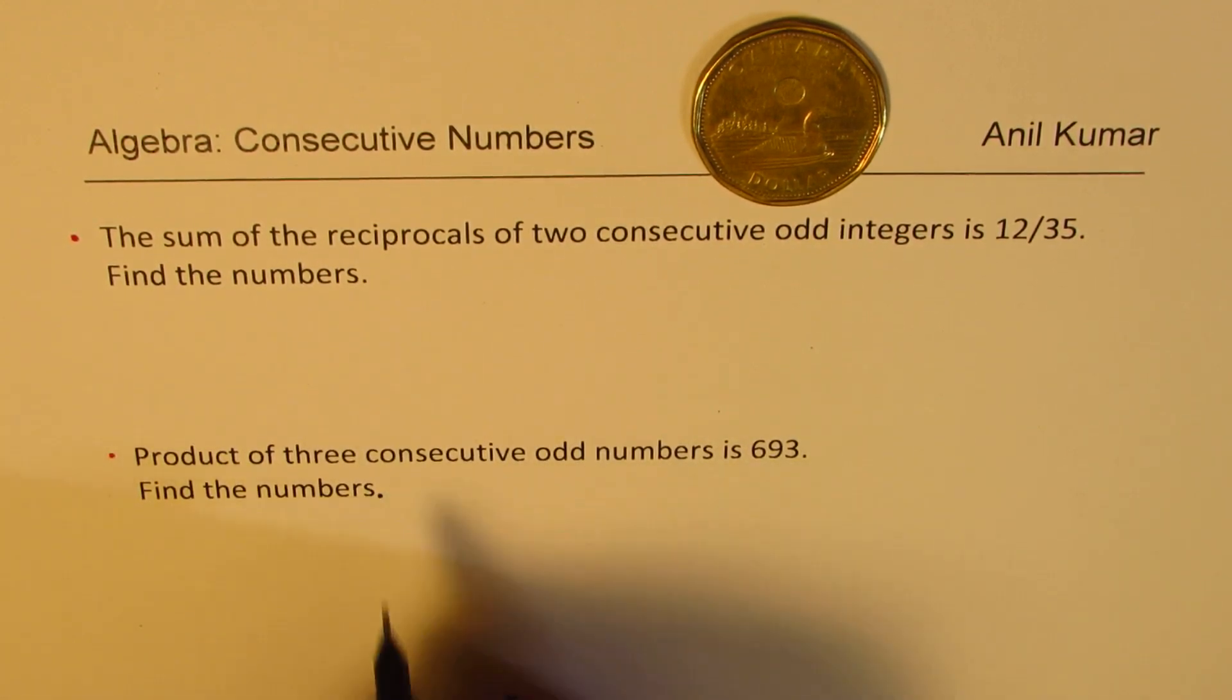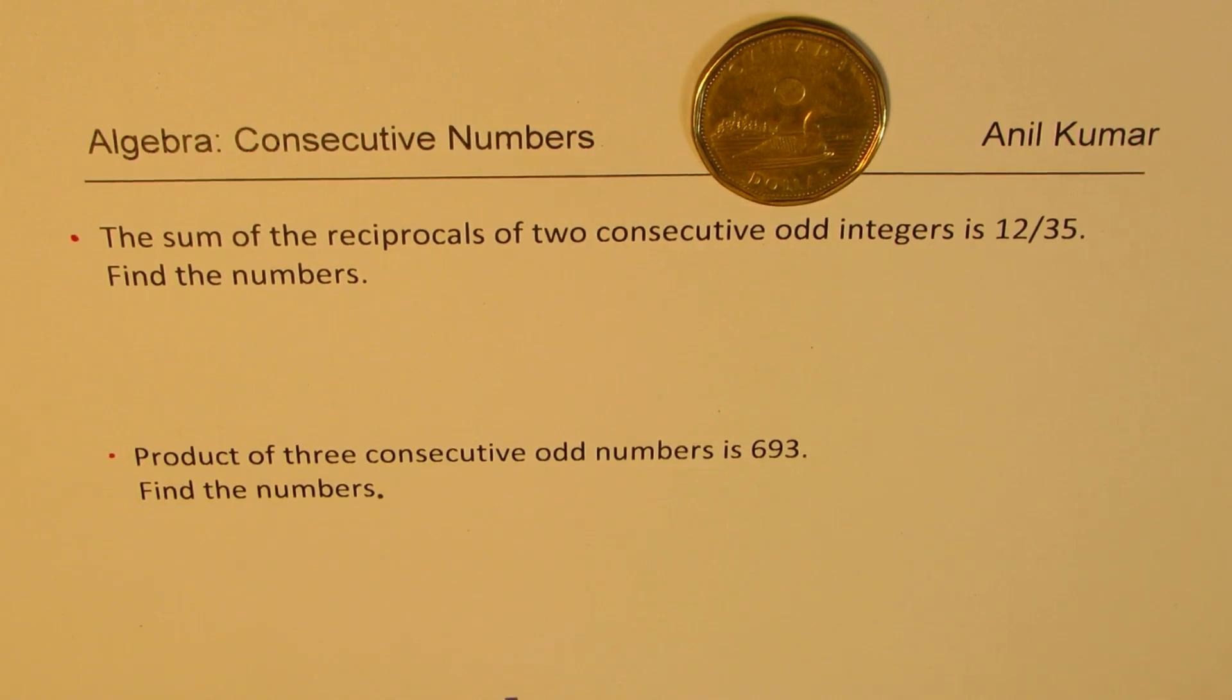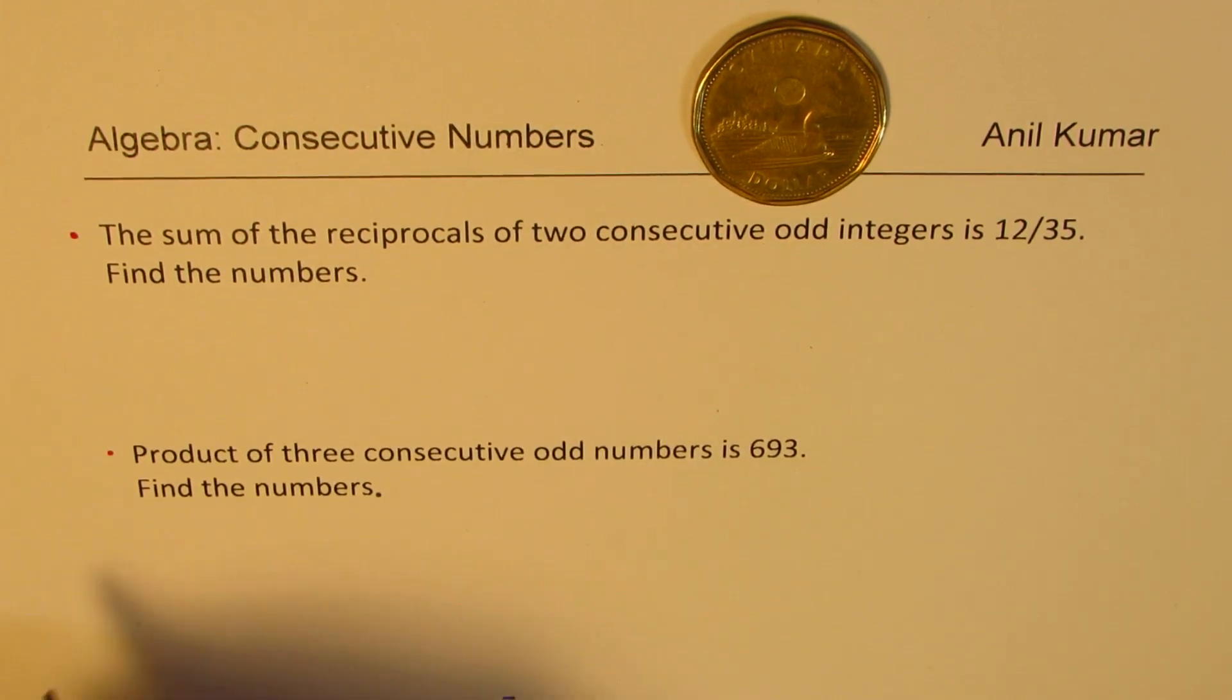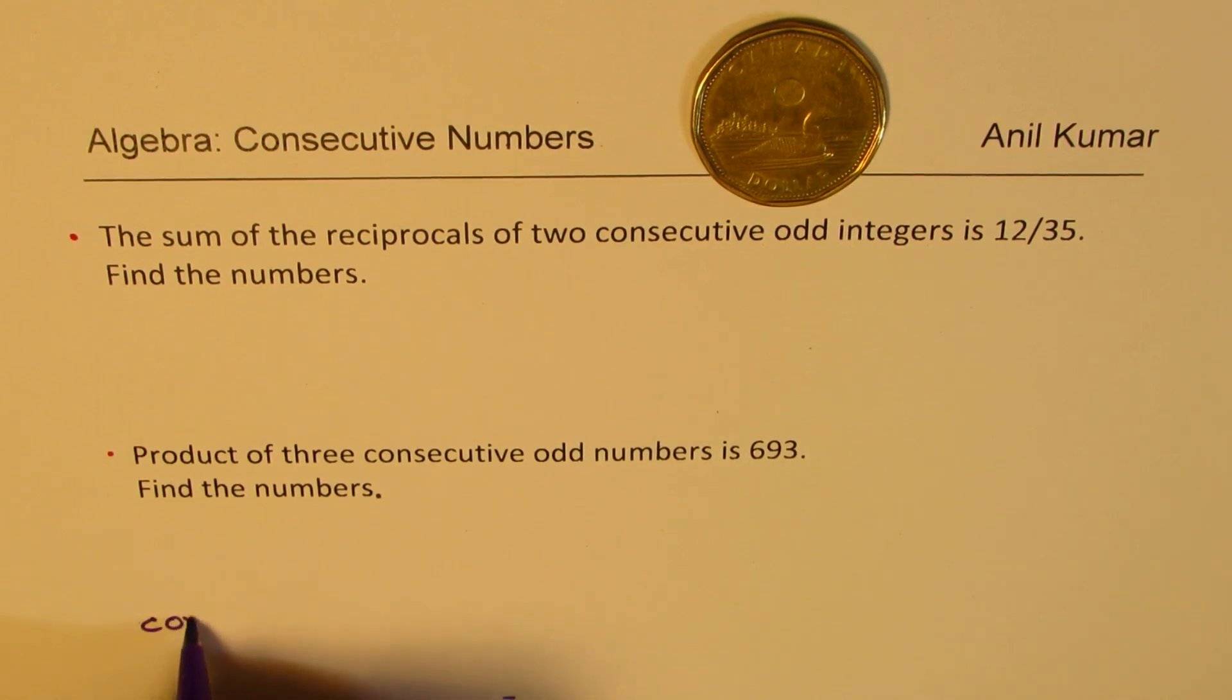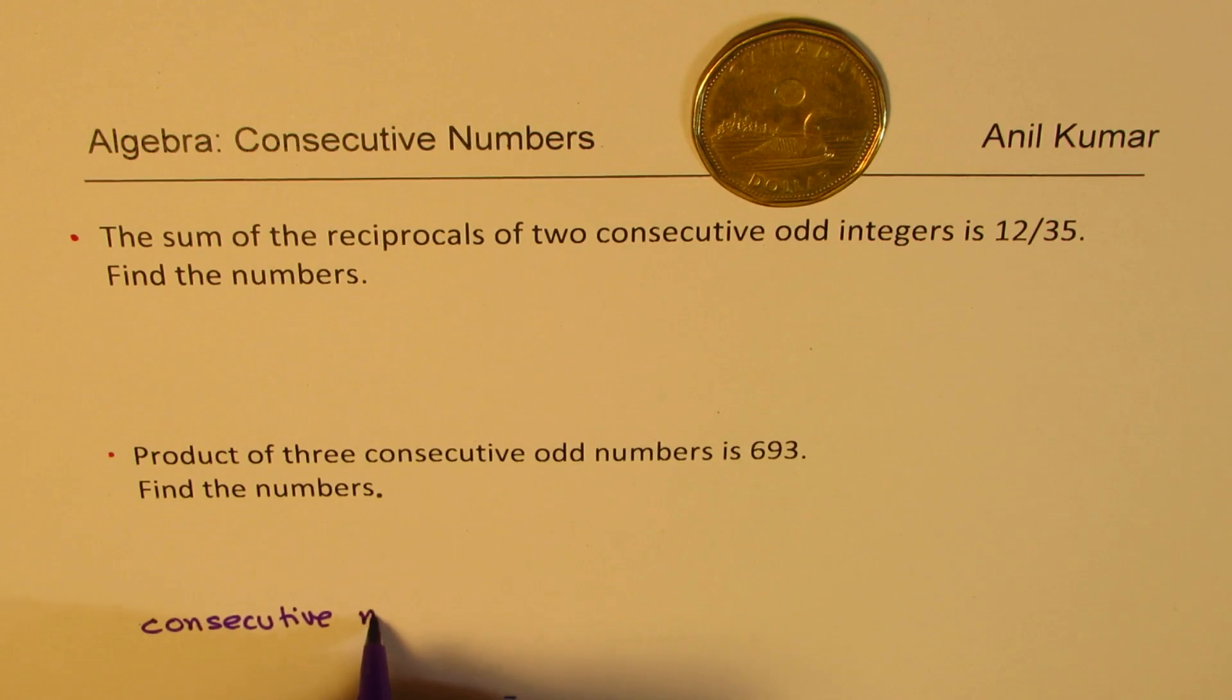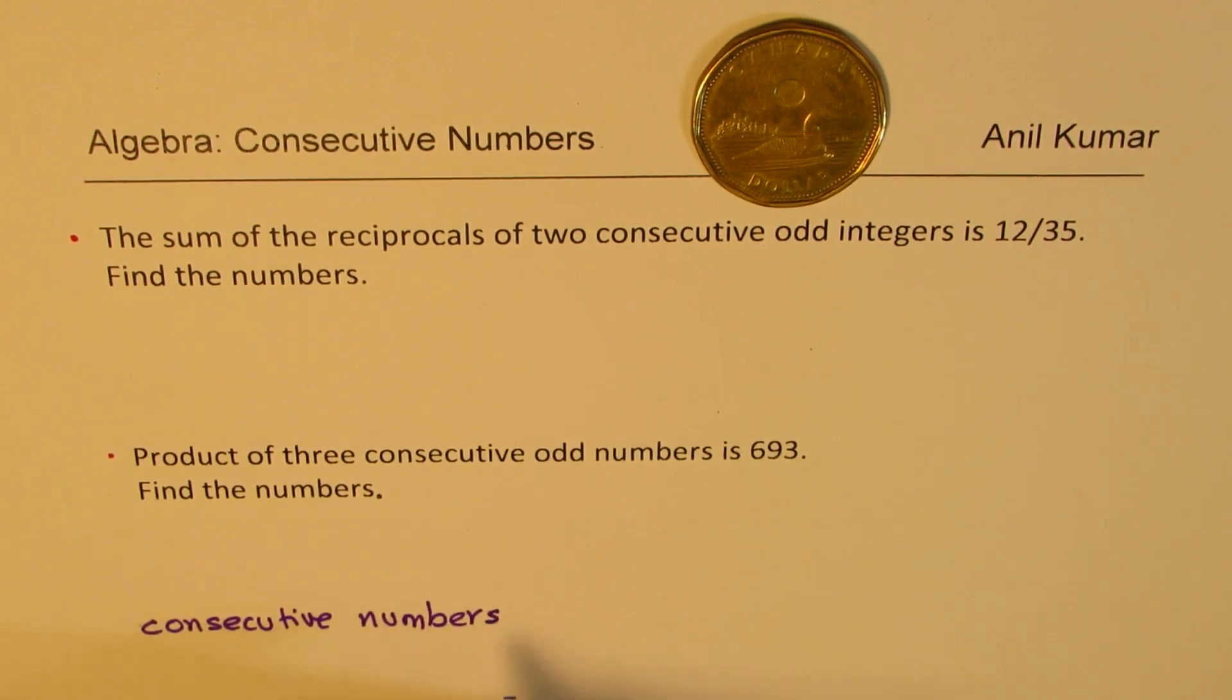So let us understand what are consecutive numbers and then we'll provide the solution. So what are consecutive numbers? Consecutive numbers are numbers which come together.